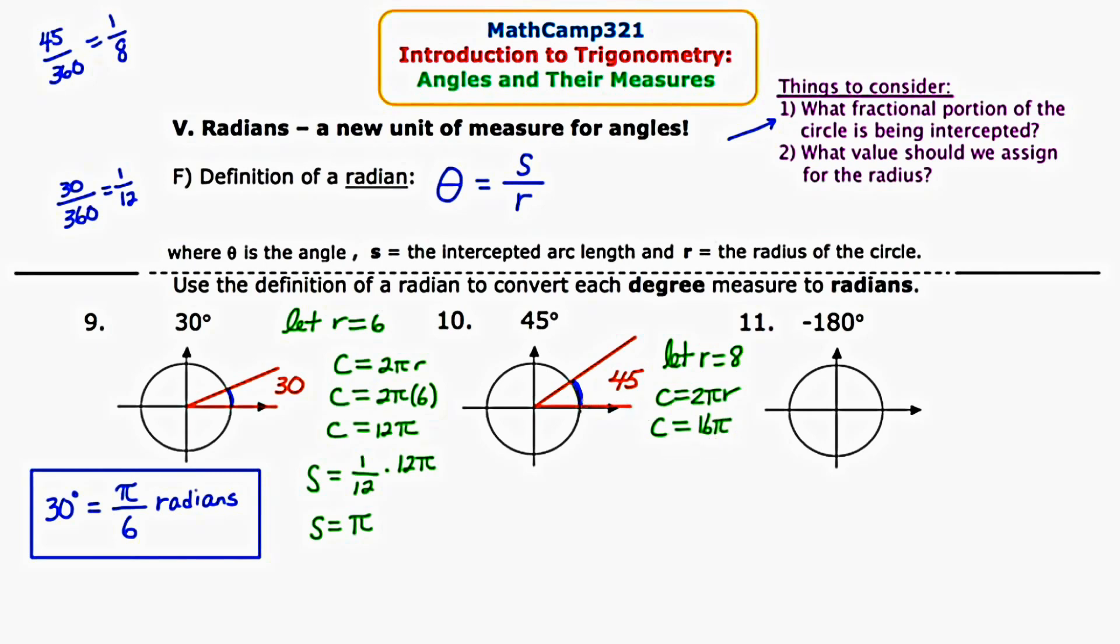The circumference of this circle is 16π, but we don't want the full circumference. We only want the fractional portion that's represented by this arc, which is 1/8. So S is equal to 1/8 of the full circumference. We're going to be left with an arc length of 2π. Our given angle measure, which is 45, is going to be the ratio of S, which is 2π, over the radius of 8. This reduces to π/4. So our conclusion is that 45 degrees is equal to π/4 radians.